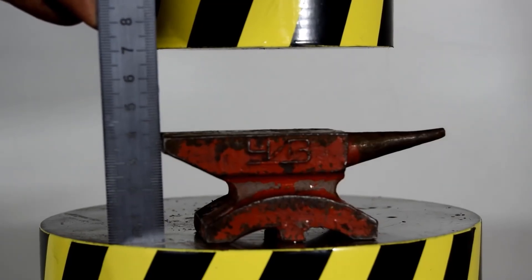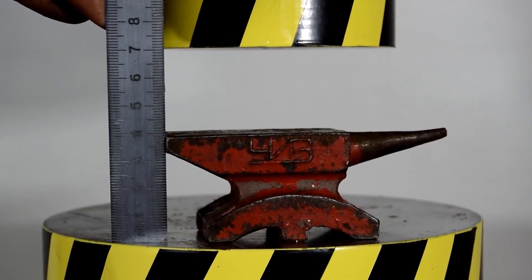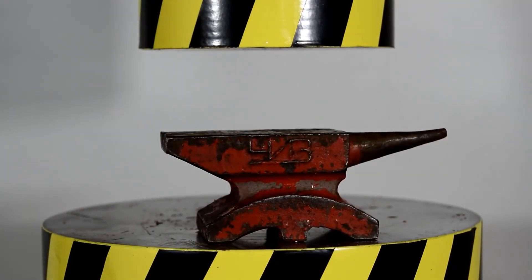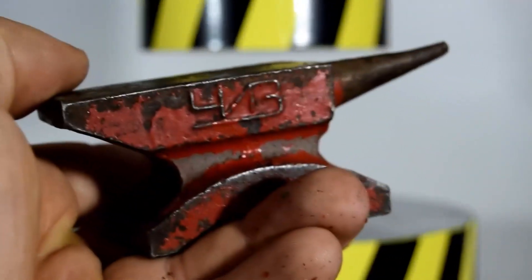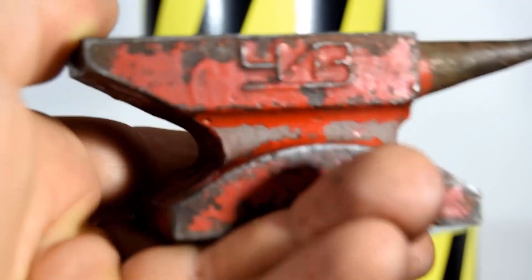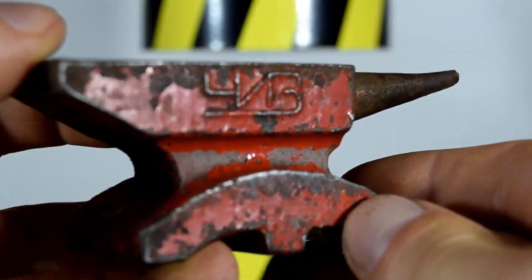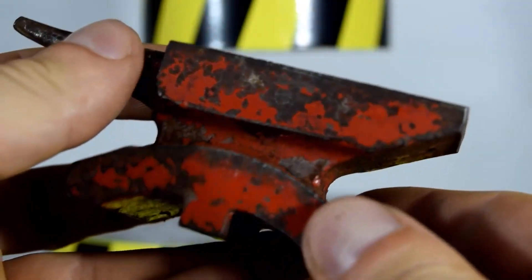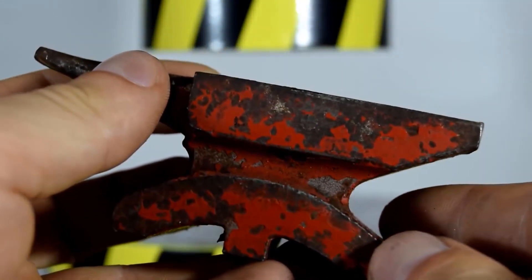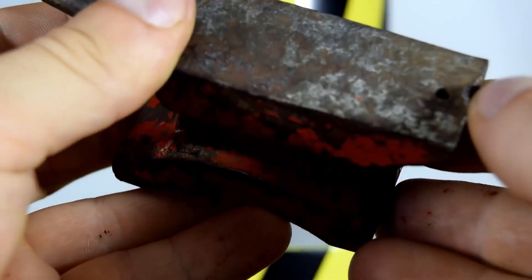Well, this is a very good indicator, considering that the height of the Chinese anvil has decreased by 15 millimeters. Now, these two anvils have the same height.